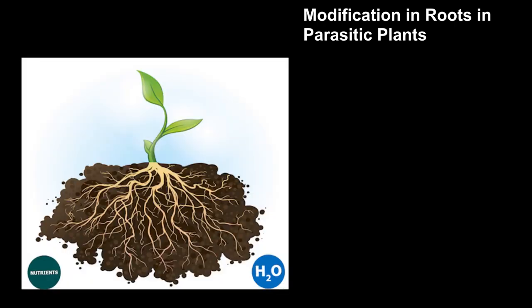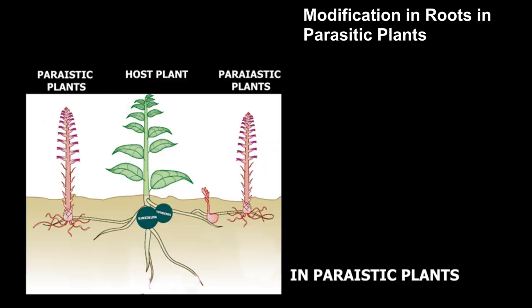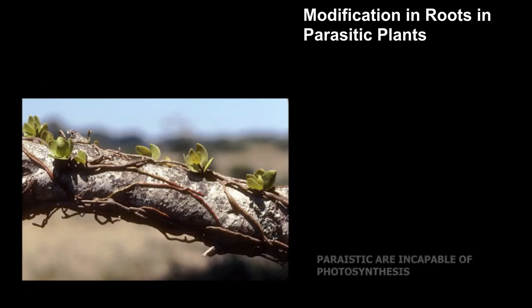Let's now discuss the modification in roots of parasitic plants. Normal roots are designed to absorb nutrients and water from soil, but in the case of parasitic plants, roots get modified to absorb nutrients from the host plant. Parasitic plants are incapable of performing photosynthesis and are dependent on other plants for nutrition.